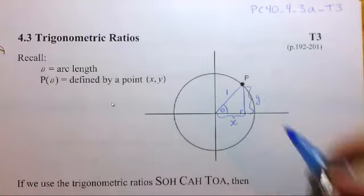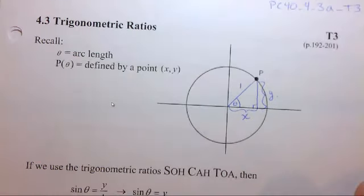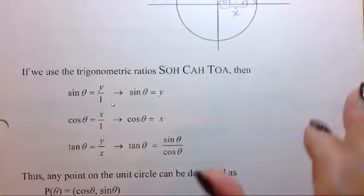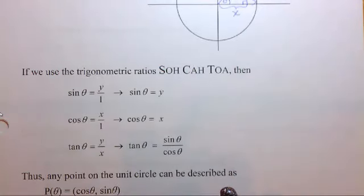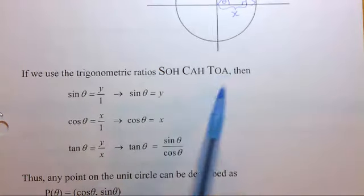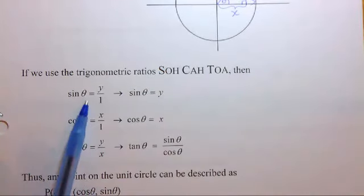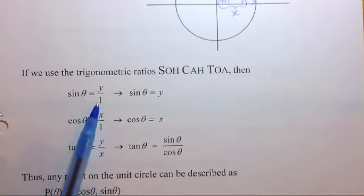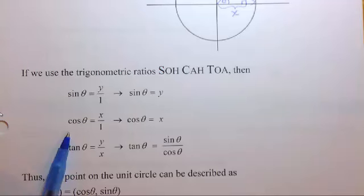And this is the right angle triangle that's created for us. So, we're going to use our trigonometric ratios, which are sin, cos, and tan. We're familiar with SOH CAH TOA. And in the unit circle, we've got sin theta equals y over 1, because the radius is going to be 1. Cos theta is x over 1. And tan theta is y over x.